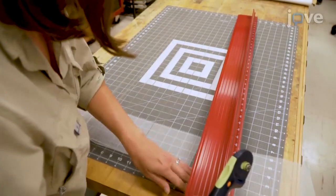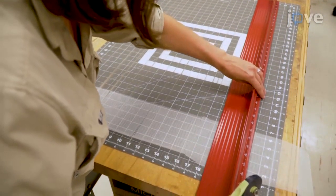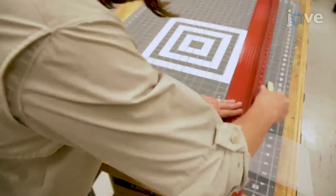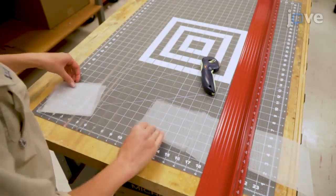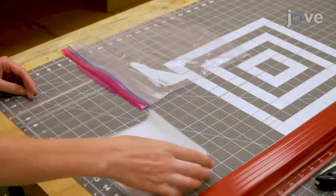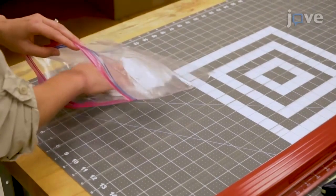To construct the adult sentinel cages, first use a rolling disc cutter, straight edge, and cutting board to prepare two 5x5-inch tool mesh squares per sentinel cage from bulk tool yardage. Store the tool mesh squares in batches of 50 in 1-quart resealable plastic bags.